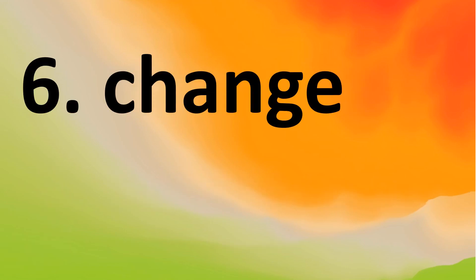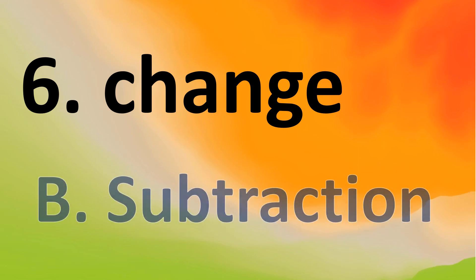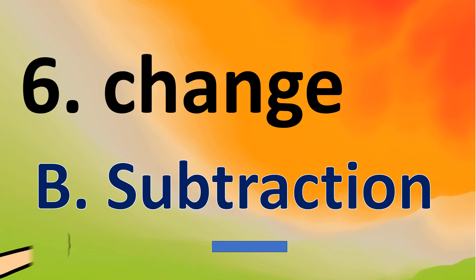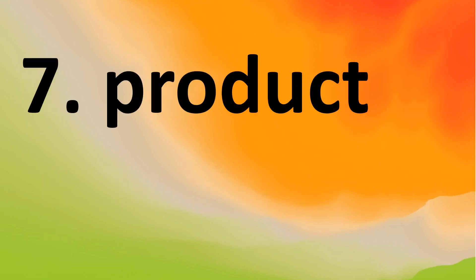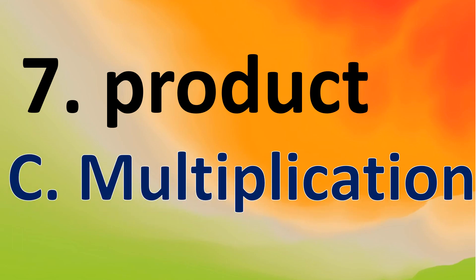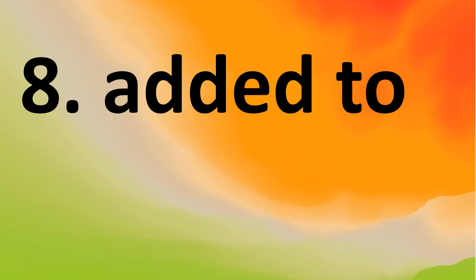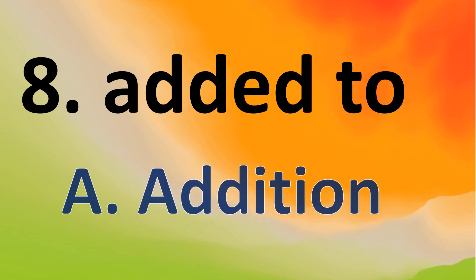Number 6: change. What operation will it be? Change — amazing! It's letter B, subtraction. Number 7: product. What operation? Product — nice one! It's letter C, multiplication. Number 8: added to. What operation? Added to — very good! It's A, addition.